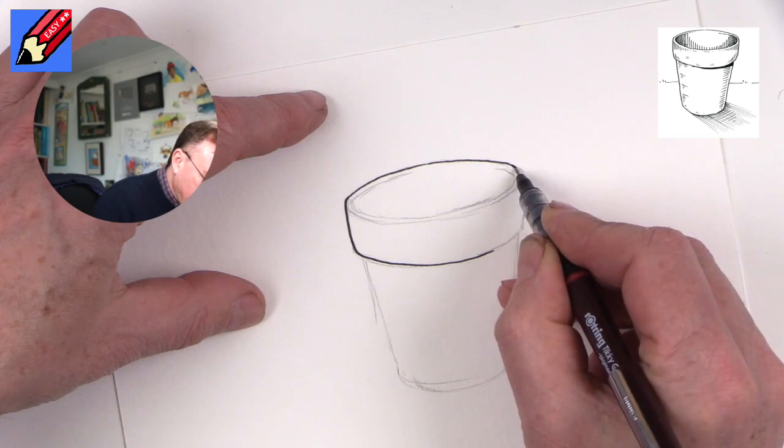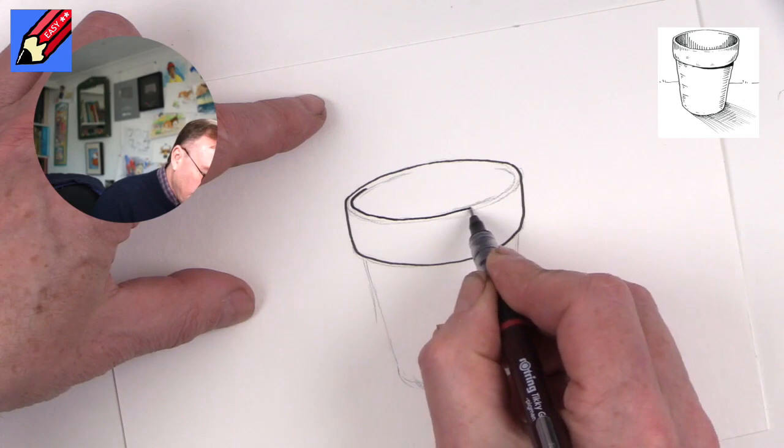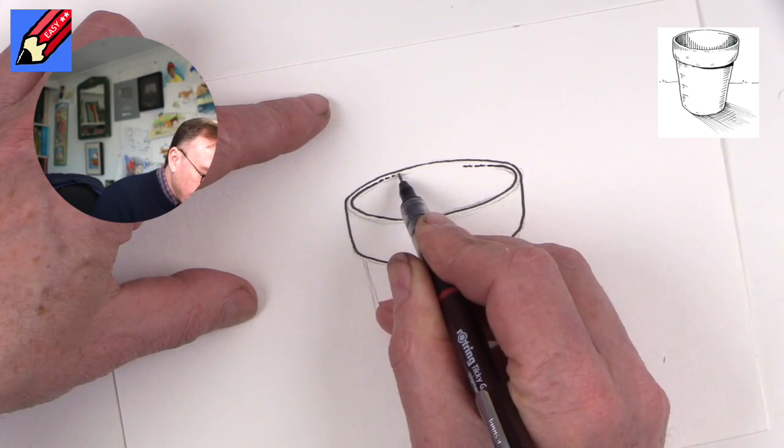That's going to come around like that, and then we're going to draw the inside ellipse so that will come around like that. And then here we're going to let that just sort of fade away into dots.